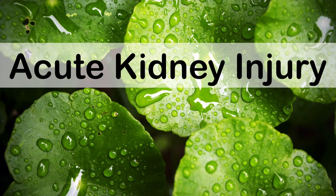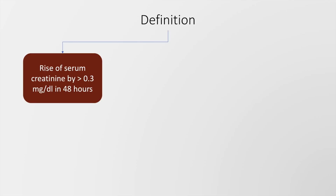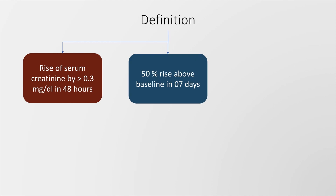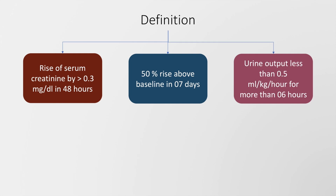Acute kidney injury is defined as a rise of serum creatinine by more than 0.3 mg per deciliter in 48 hours, or a 50% rise above the baseline over a period of 7 days, or a urine output less than 0.5 ml per kg per hour for more than 6 hours.